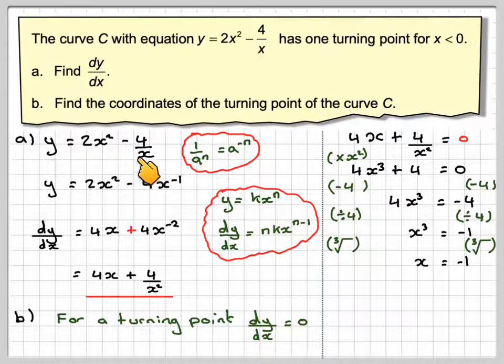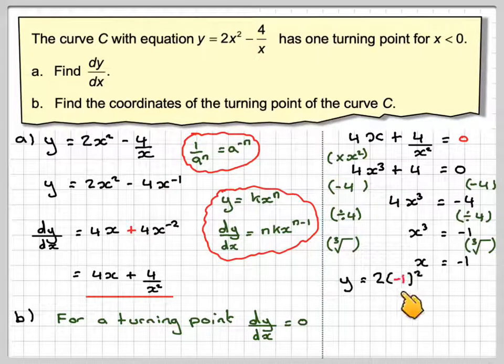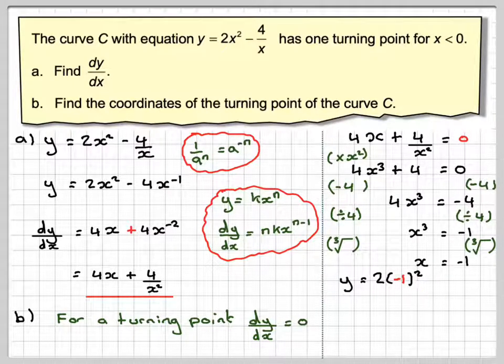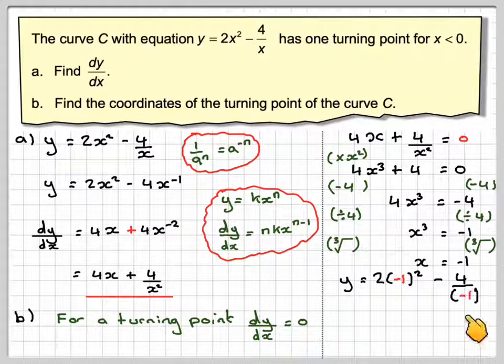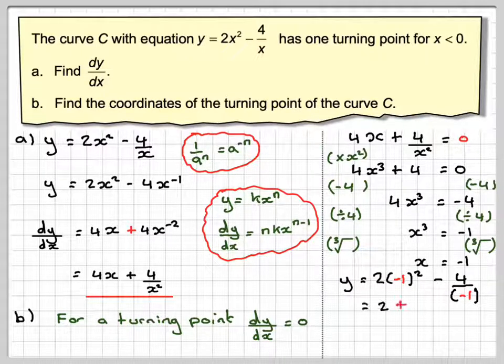To find the y-coordinate, we need to put x equals minus 1 into y. So y will be 2 times minus 1 squared minus 4 over minus 1. That's going to give 2. Minus 1 squared is 1.